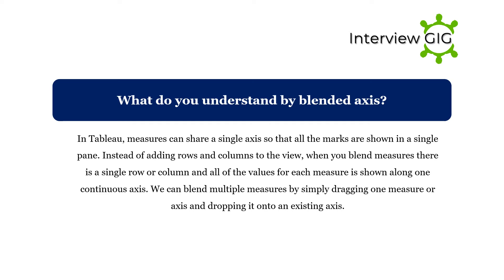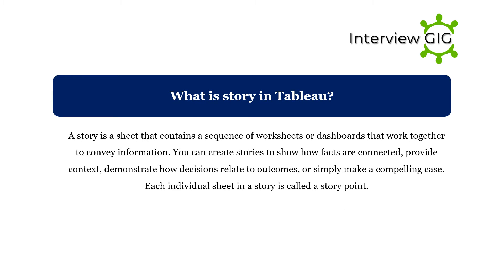What do you understand by blended axis? In Tableau, measures can share a single axis so that all the marks are shown in a single pane, instead of adding rows and columns to the view. When you blend measures, there is a single row or column and all of the values for each measure are shown along one continuous axis. We can blend multiple measures by simply dragging one measure or axis and dropping it onto an existing axis.